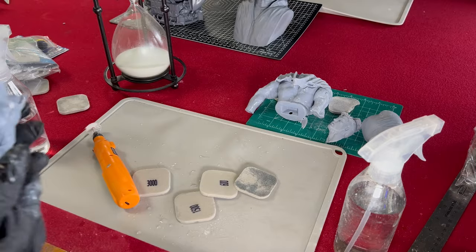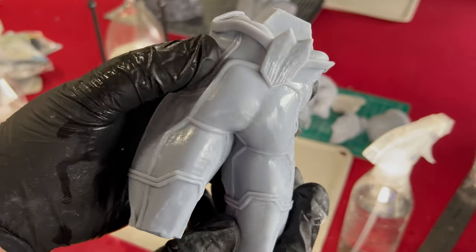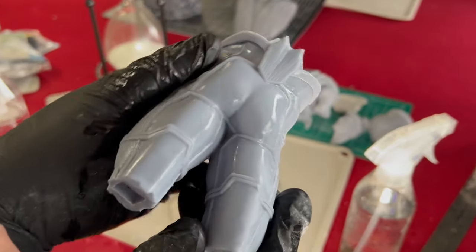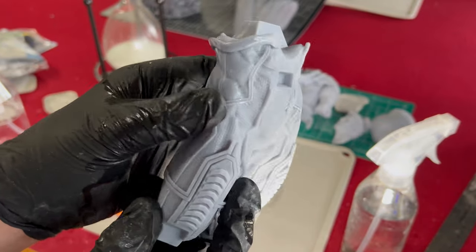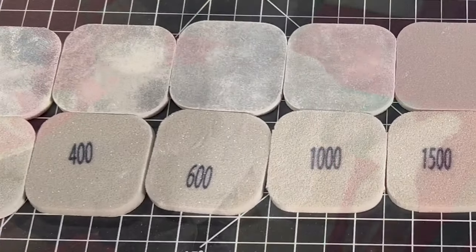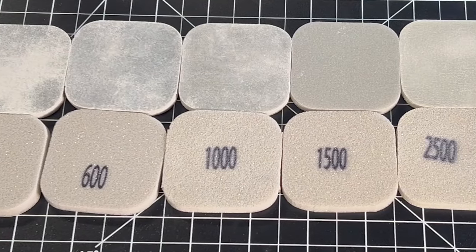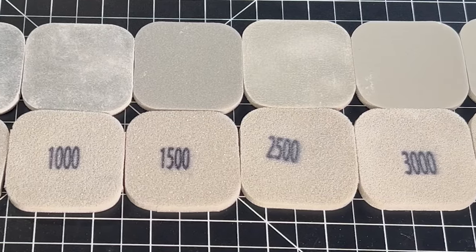Any grit over 2000 is considered polishing sandpaper and should be used as a finishing sandpaper to give you a super smooth and glossy finish to your piece. As long as you're patient and working in this order, you can't really mess it up. There is no right combination, but it will vary a bit from model to model.